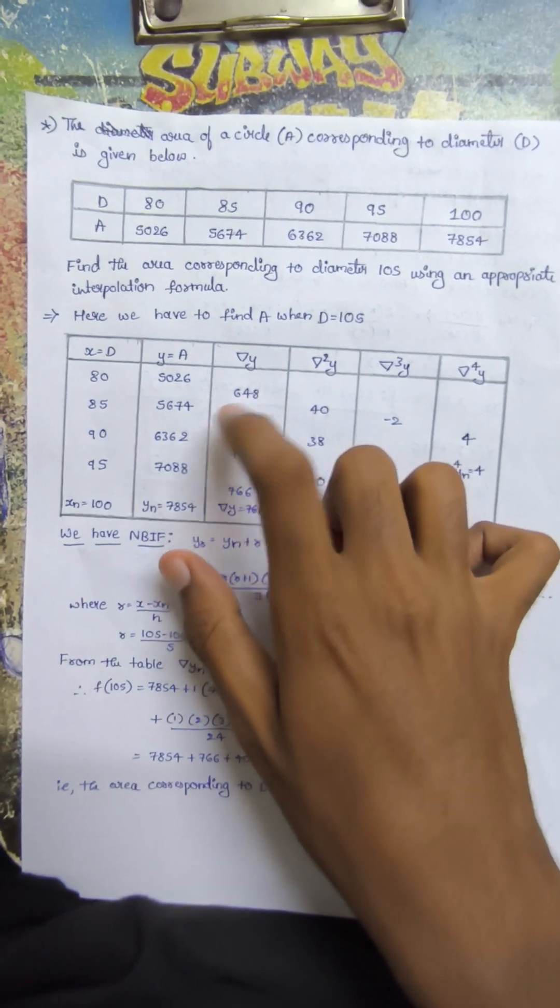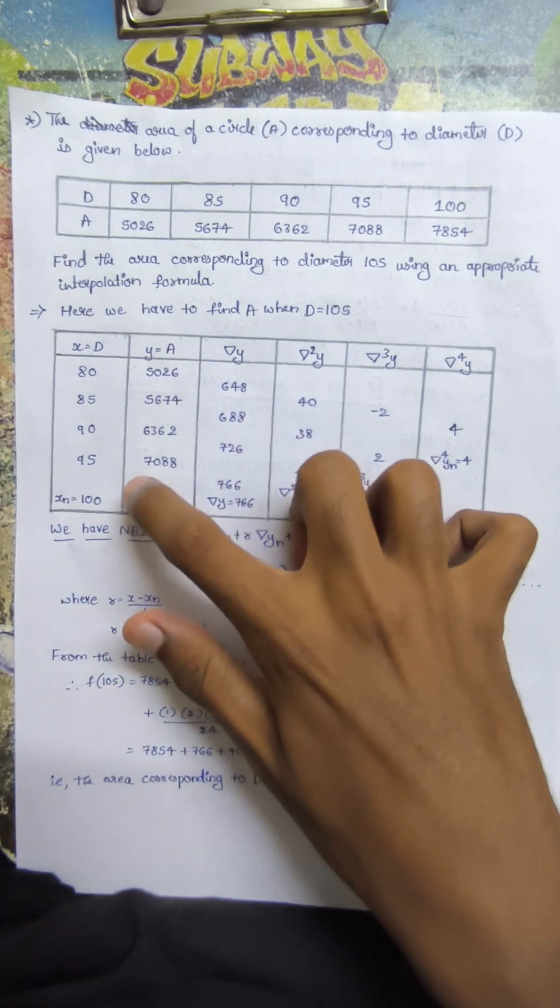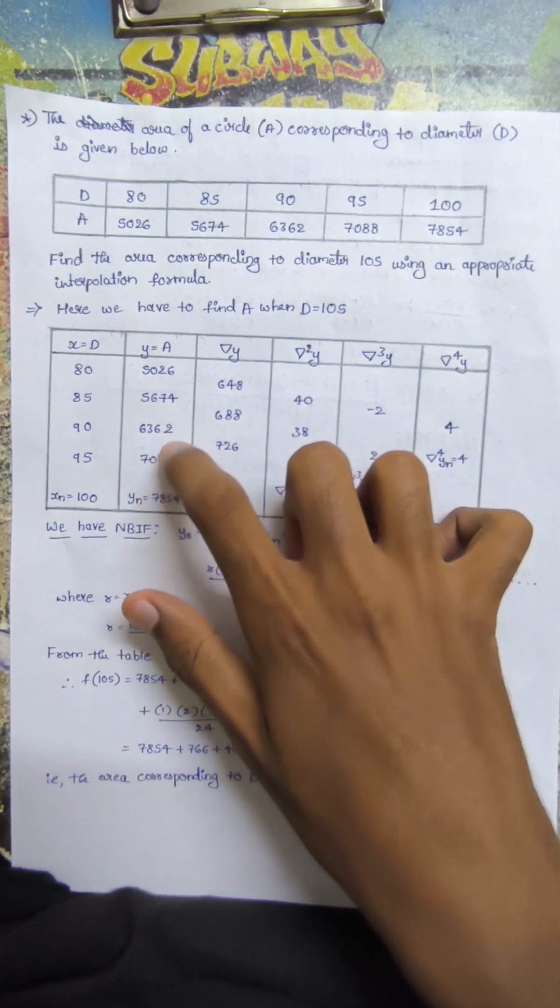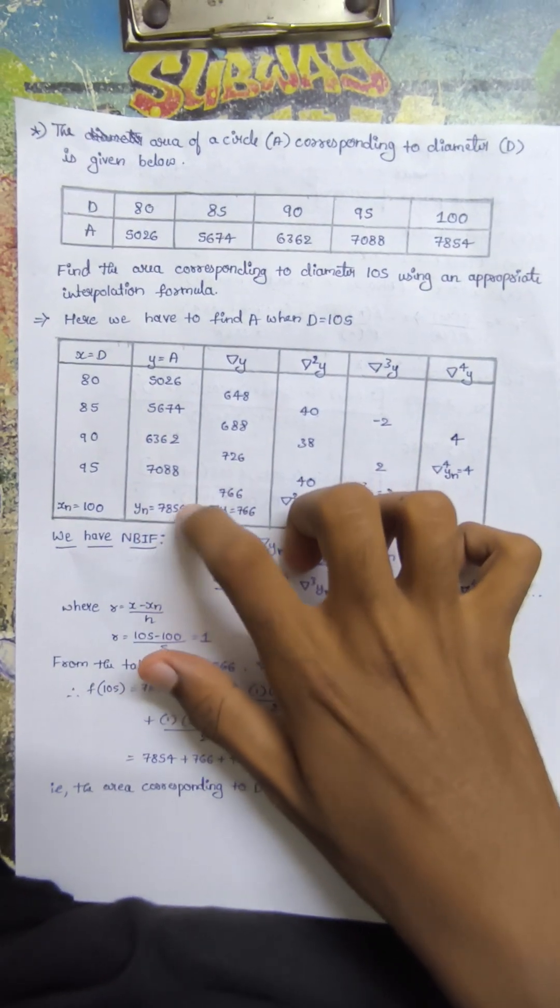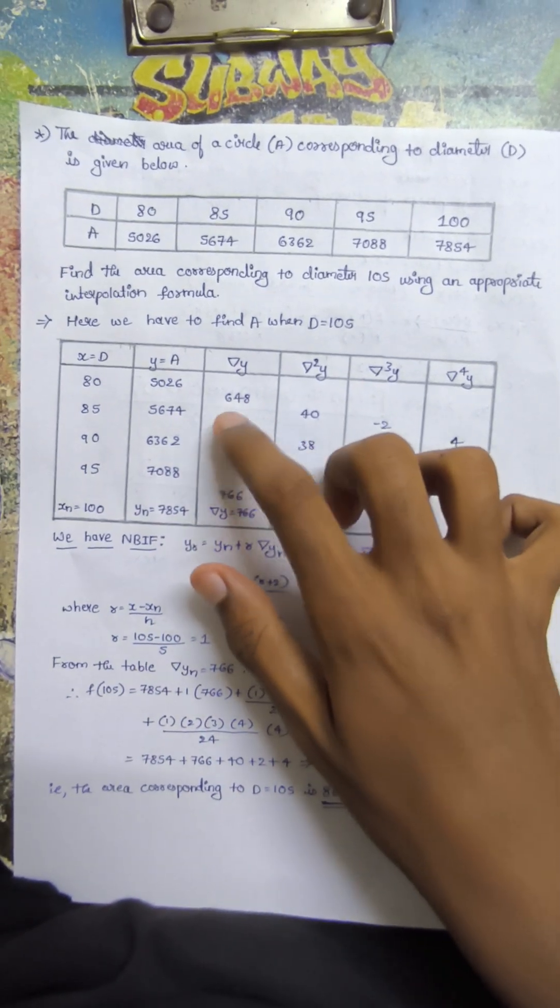Del y equals 648. 6362 minus 5674 is 688. 7088 minus 6362 is 726. 7854 minus 7088 is 766. Second differences: 688 minus 648 is 40, 726 minus 688 is 38, 766 minus 726 is 40.